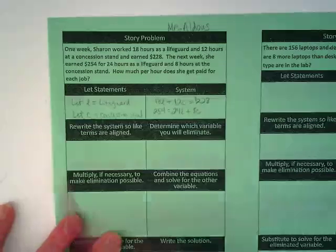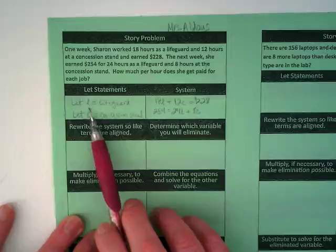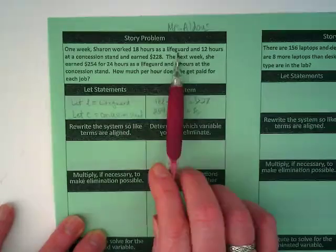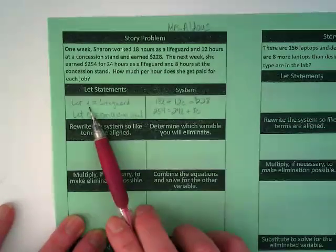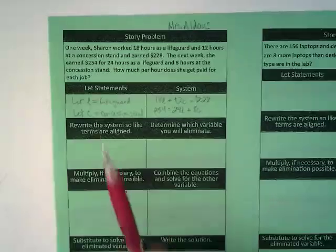Okay, so we have our let statements because in this problem she's working two jobs as a lifeguard and as a concession stand. That's why we came up with L for lifeguard and C for concession stand.